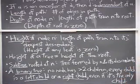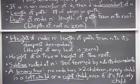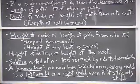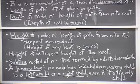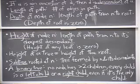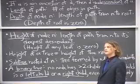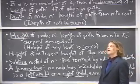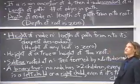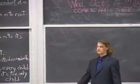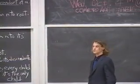Are you eliminating the possibility that a node has two left children or two right children? Yes. A node cannot have two left children or two right children. If it has two children, one has to be left and one has to be right.